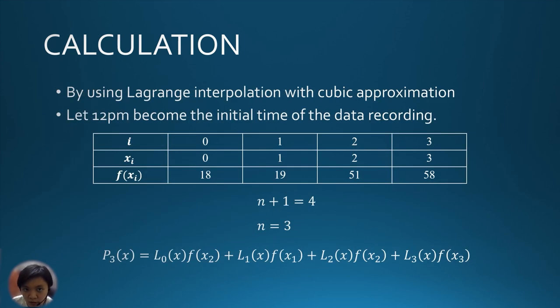Then, the data is written into a table. 12pm is written as the initial time of the data, so it is 0 and 1pm is 1, 2pm is 2, 3pm is 3 in the unit of hour. N+1 is equal to the number of points, therefore N is equal to 3.